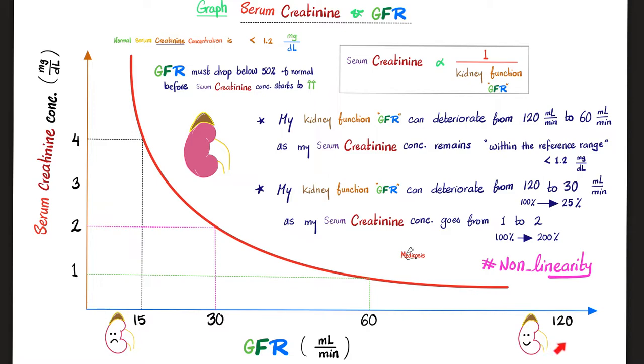Let's say that my kidney function, GFR, deteriorated from 120 to 60. My serum creatinine level at 120 was within the reference range. But when I deteriorate from 120 to 60, I lost half of kidney function. Still, the serum creatinine is within reference range. So I can lose half of my kidney function, yet still my serum creatinine shows up as within reference range.